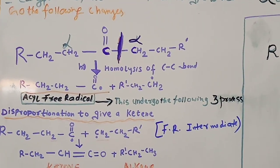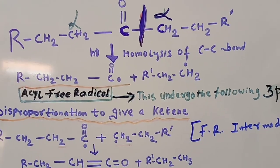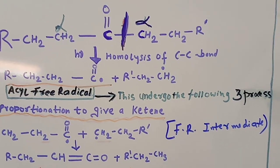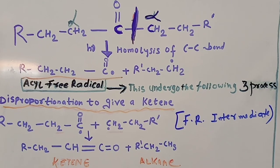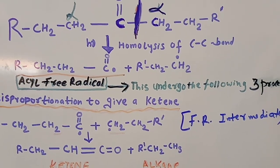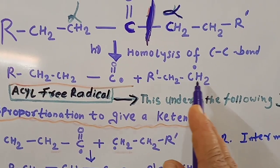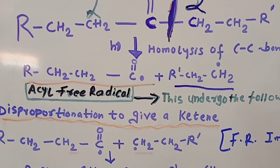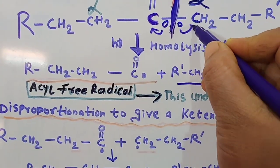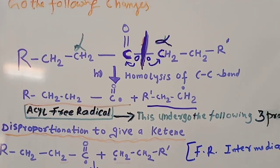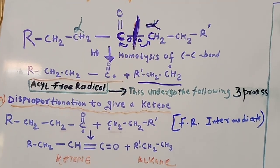Aldehydes and ketones undergo the following changes. When light radiations fall on the carbonyl compound, it undergoes homolysis of the carbon-carbon bond at the alpha position. As a result of light absorption, the ketone undergoes homolysis into two products: formation of an acyl free radical and another free radical intermediate RCH₂CH₂. Since a bond is made up of two electrons, one electron moves to the carbonyl carbon and the other to the remaining fragment, forming two free radicals.